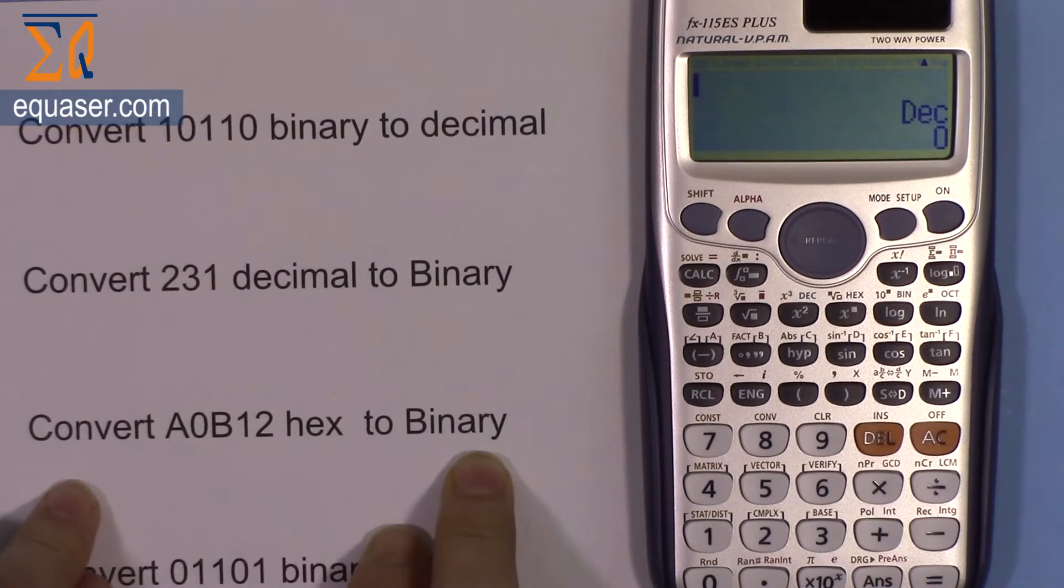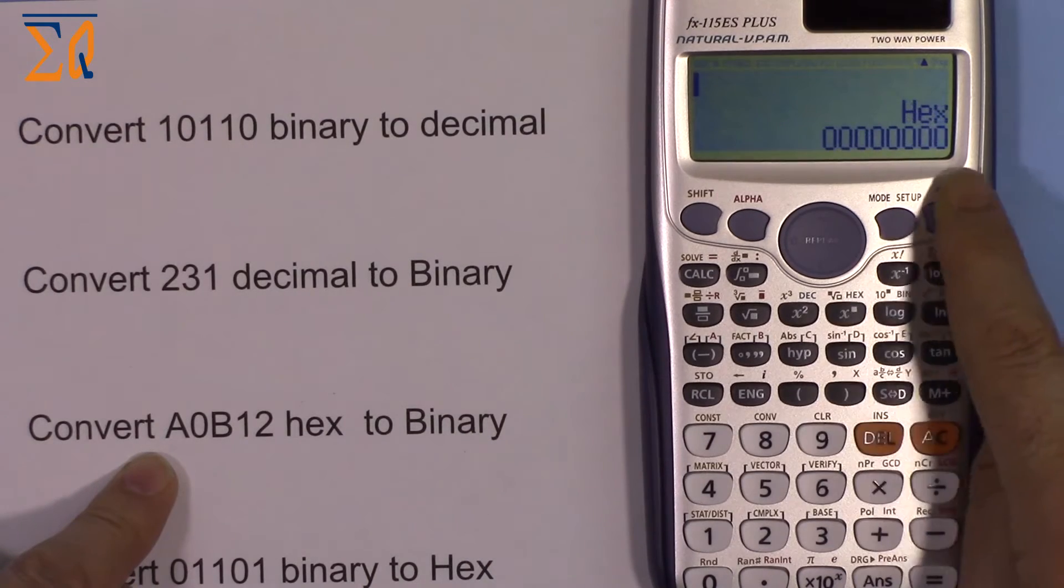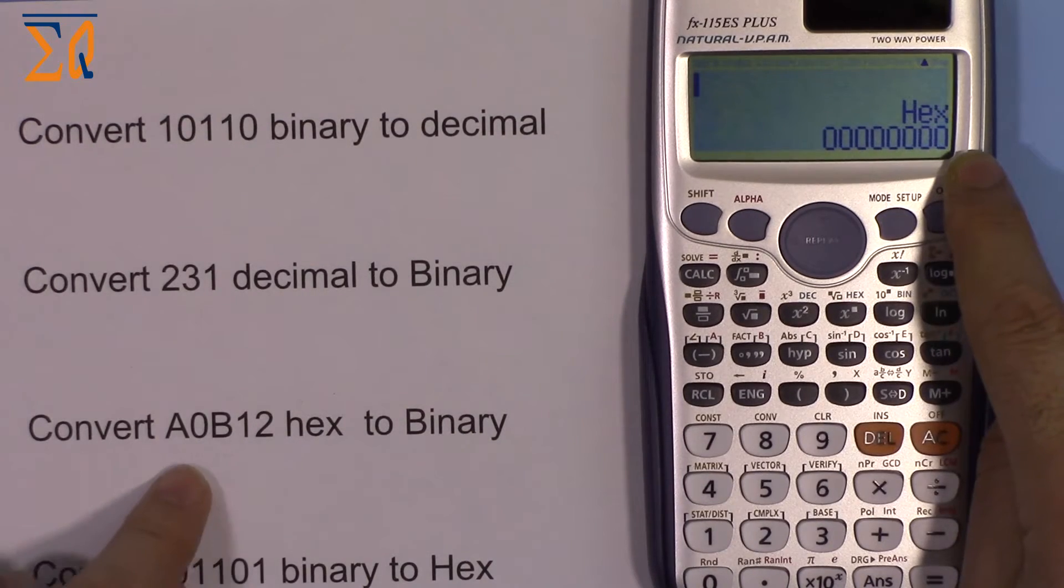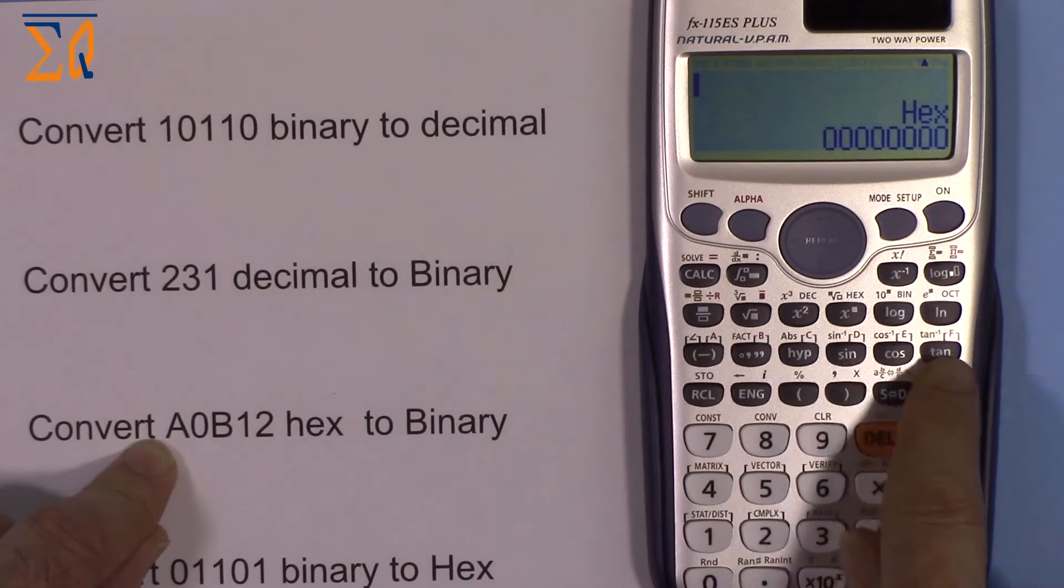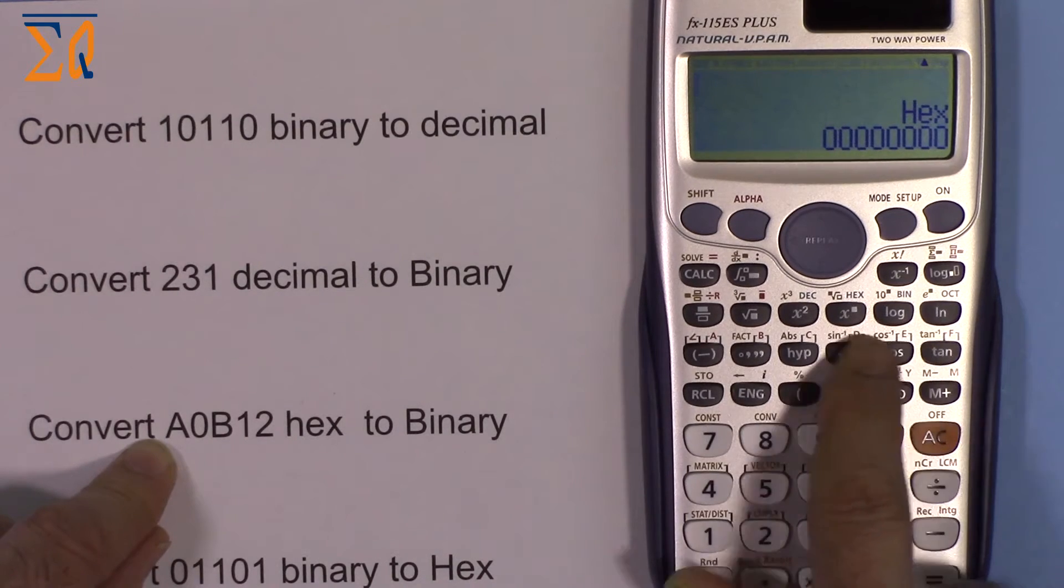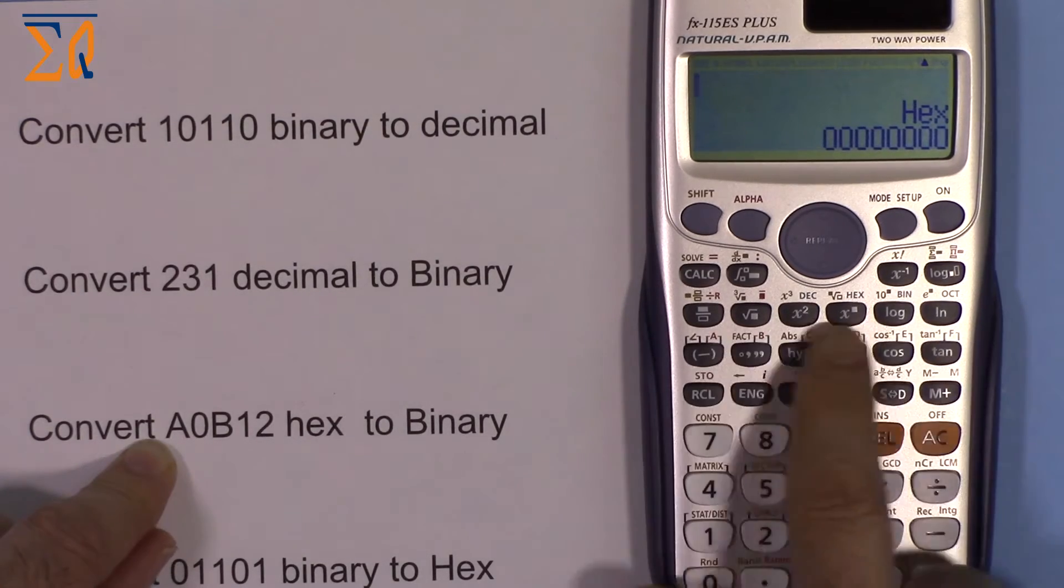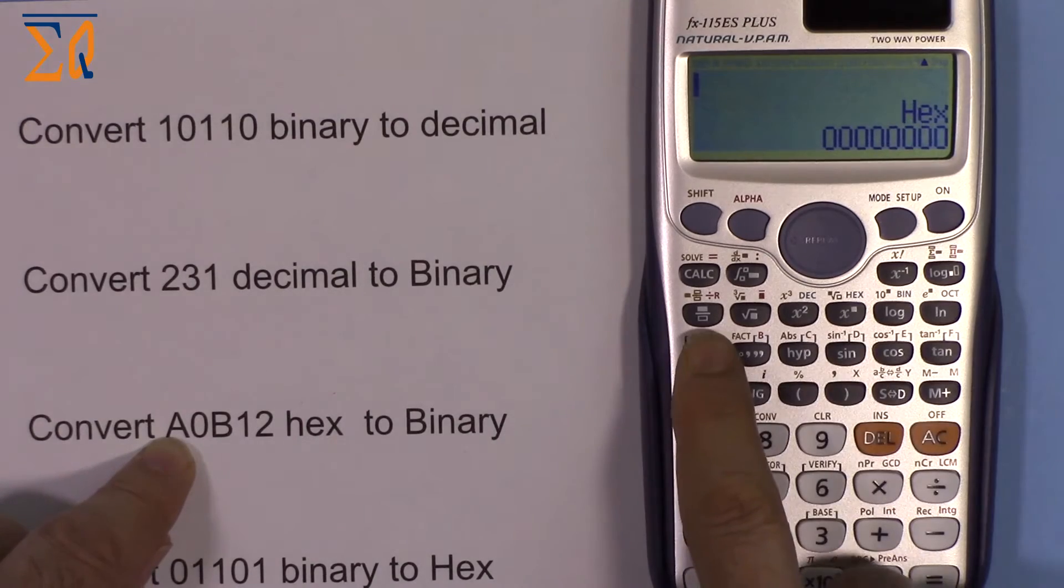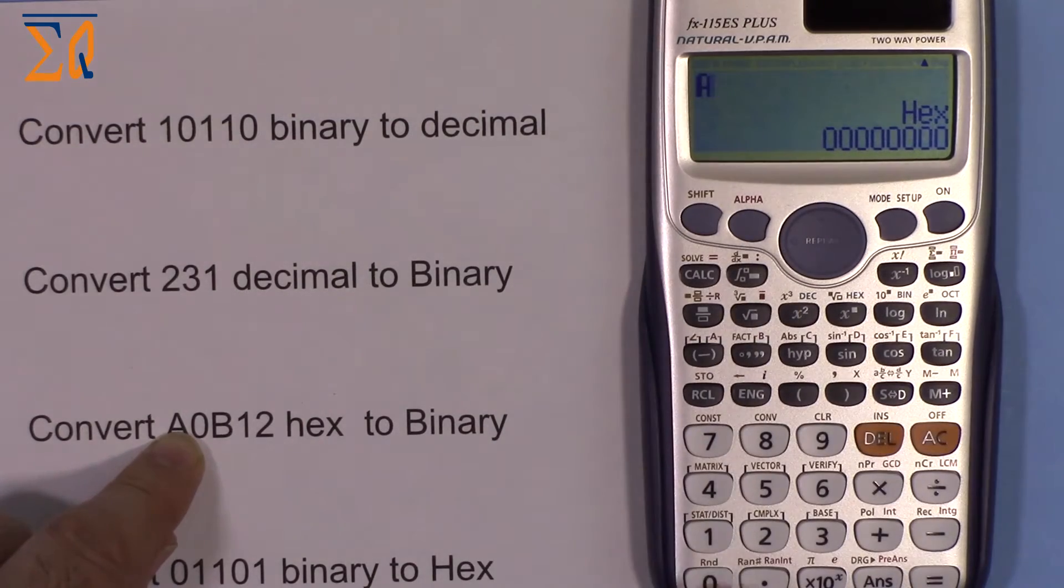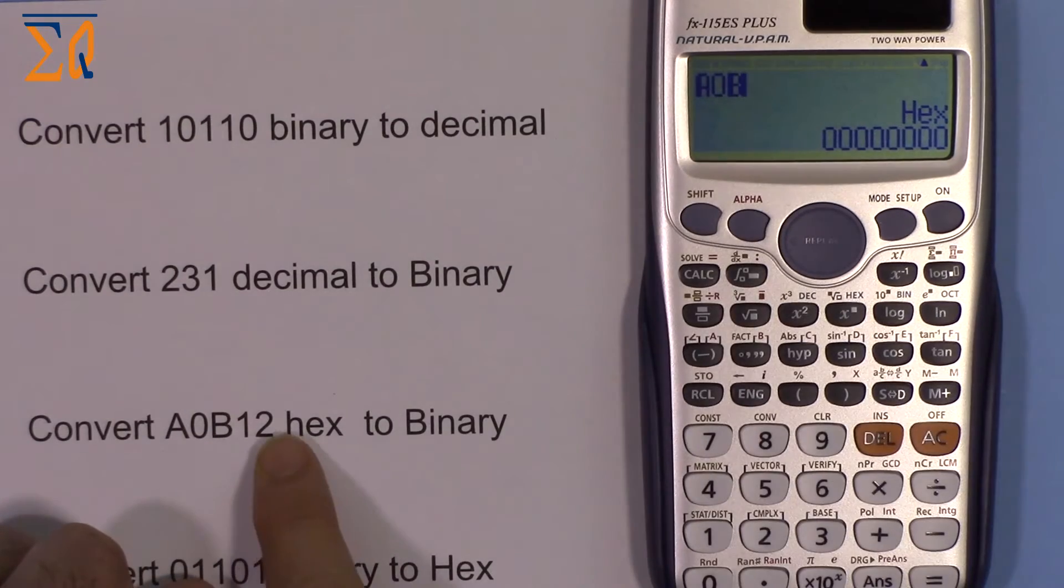All clear. Now let's convert from hex to binary. I'm pressing HEX. To enter A0B12, I use the red letters with blue square brackets - they work for hex and base values. I'm pressing A, then 0, then B, then 1, 2.